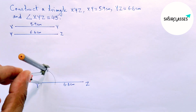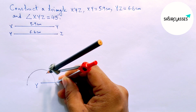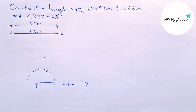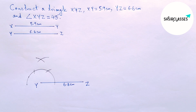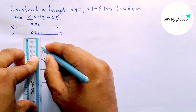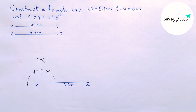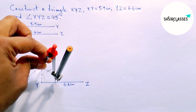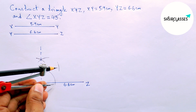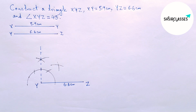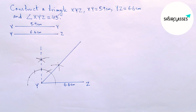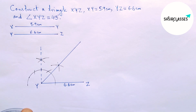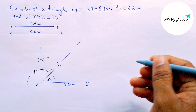Putting the compass on the point Y and taking any length, first drawing an arc. Now taking the same length, cutting here — putting the compass here and cutting here — and drawing an arc again with the same length, putting the compass here and cutting here. Now joining this. Checking this angle with the help of a protractor — this is 90 degrees and this is perfectly 45 degrees. So this is a 45 degree angle.